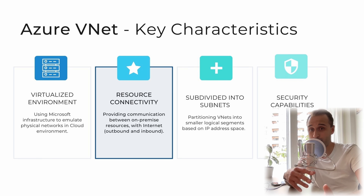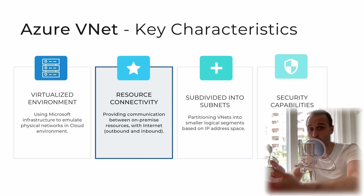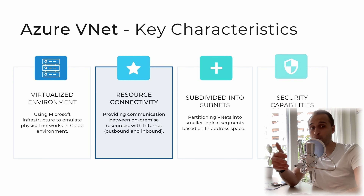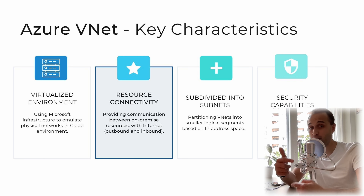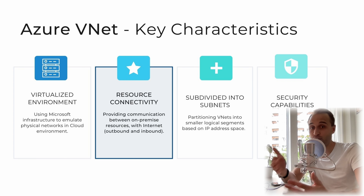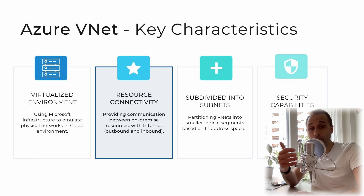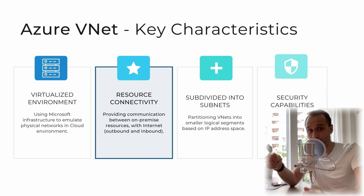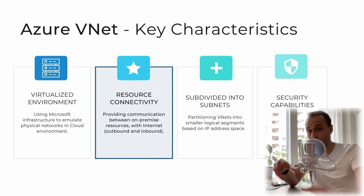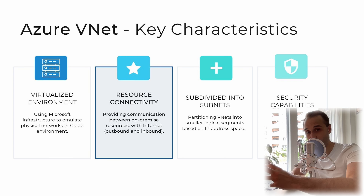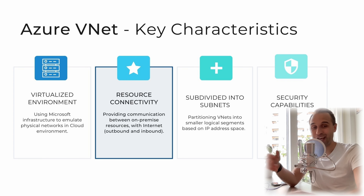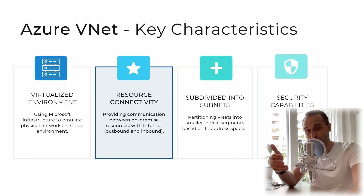Let's break it down in really simple terms. First scenario: let's imagine we have an on-premise server hosting an application that we want to connect to the Azure cloud. Azure provides a feature called VPN gateway, which allows us to establish a secure and encrypted connection between our on-premise network and the Azure virtual network. With this VPN connection in place, our on-premise resources can securely communicate with the resources in Azure — it's like having an invisible bridge that connects our on-premise infrastructure to the cloud.